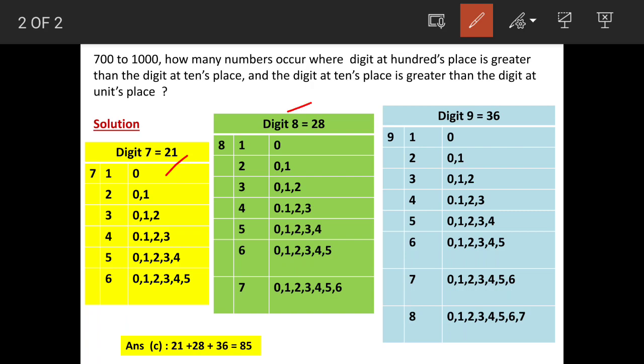Similarly, for digit 8, total number possible are 28. And similarly for digit 9, total number possible are 36. So when we add this, they'll total up to 85, which is option C and is our answer.